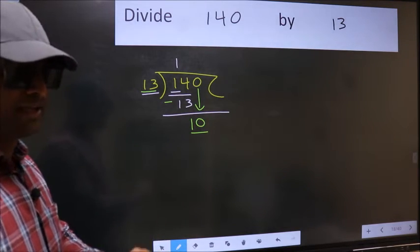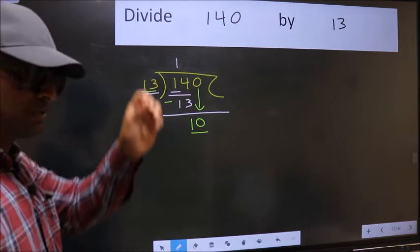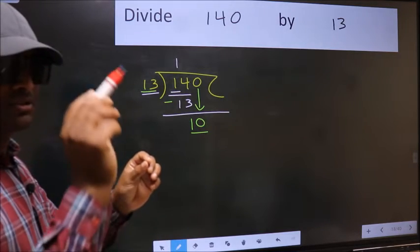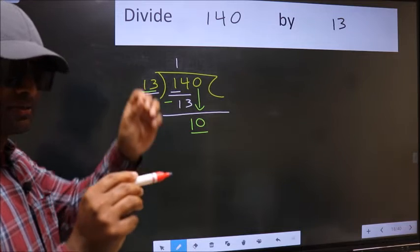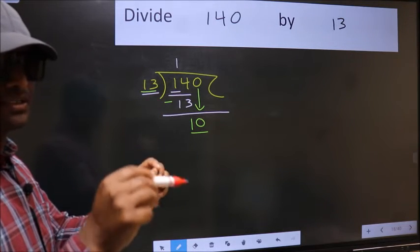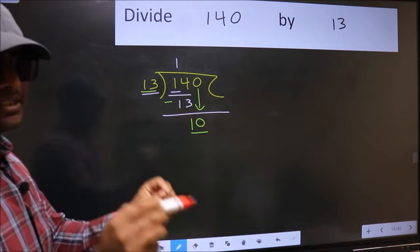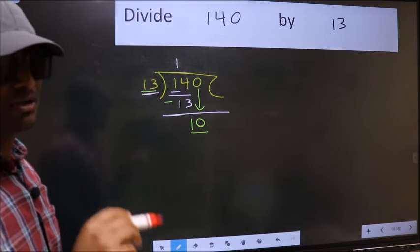I repeat: Bring the number down and also put the decimal point and take 0. Bring the number down and put the decimal point and take 0—both in the same step. You should not do this.